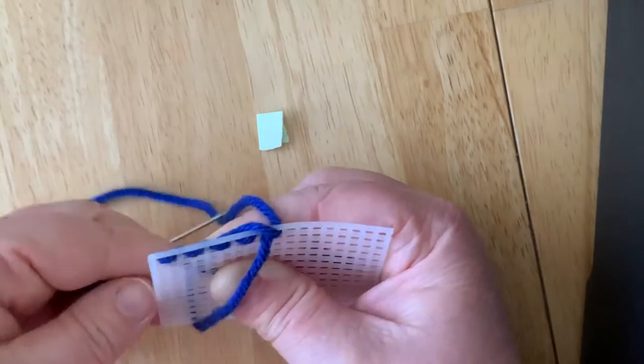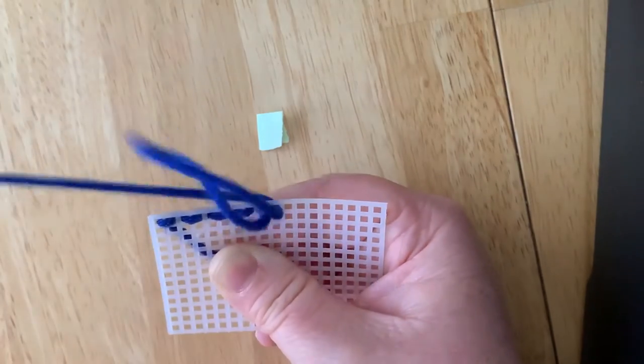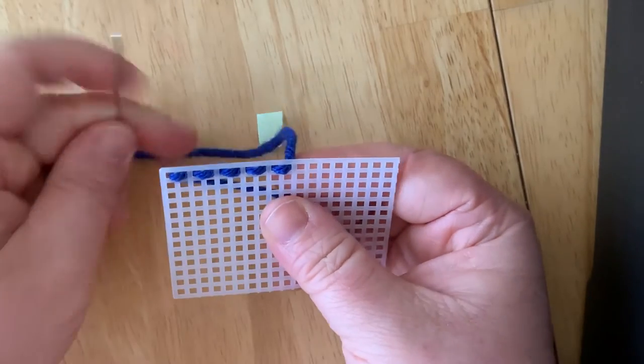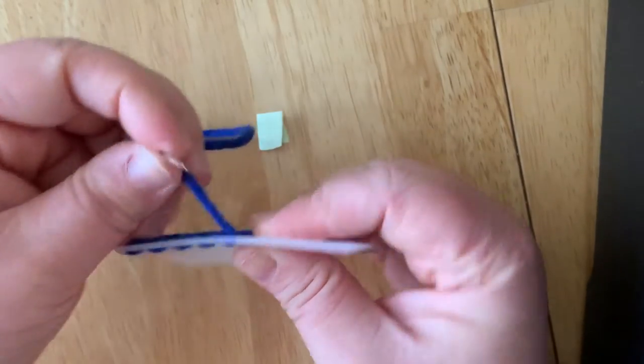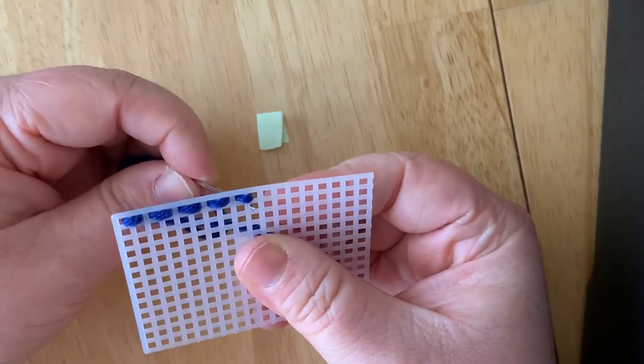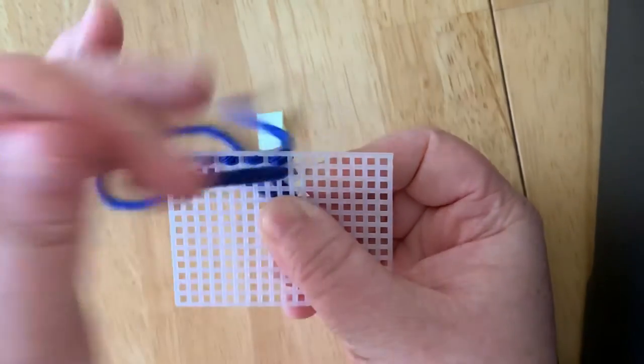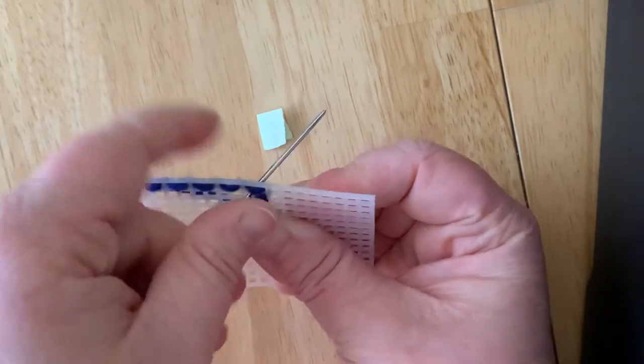And you can take this all—whoops, might get caught in the corner. If you wanted to go down to the next row, you simply take your needle. Here I am. I'm going to come down right below where I stopped and work my way back.